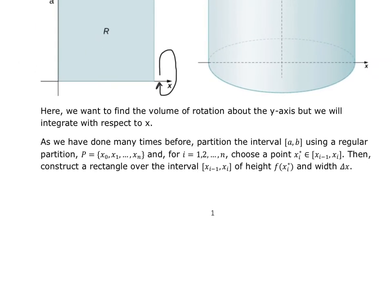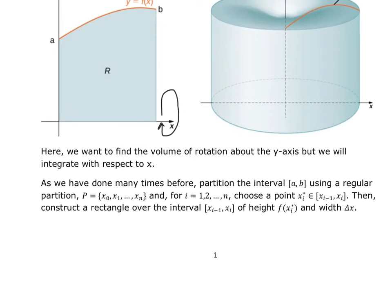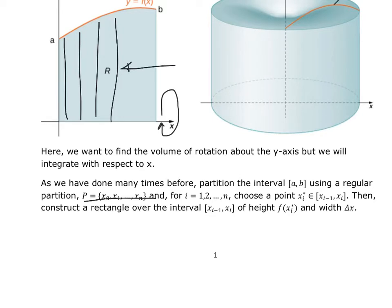Looking at the shape, if we partition it off — making cuts, say five cuts as an example — each one of those cuts is going to build a rectangle. The height is going to be determined by the function at that point, just like when we were doing Riemann sums.